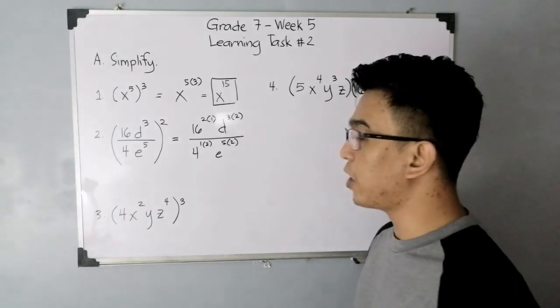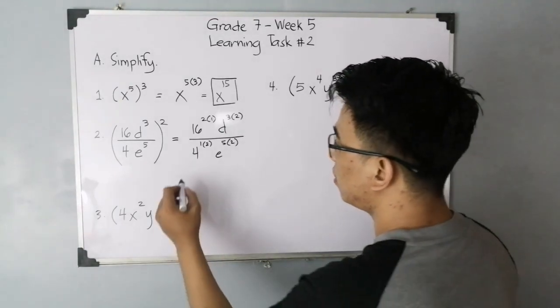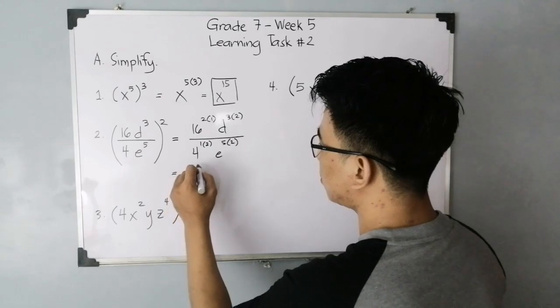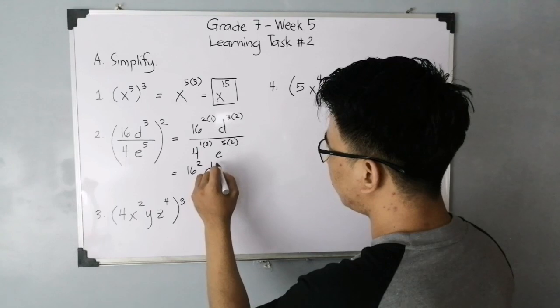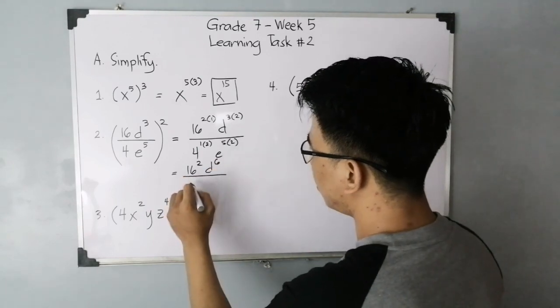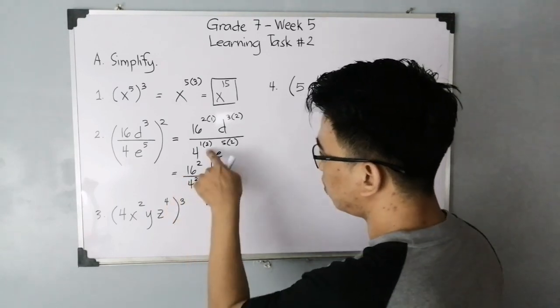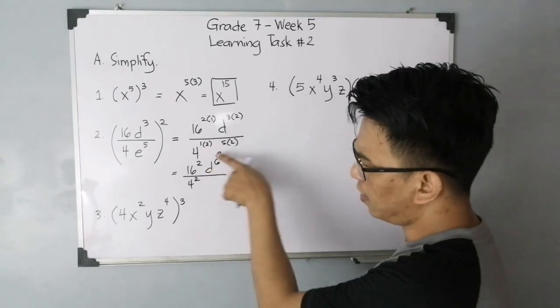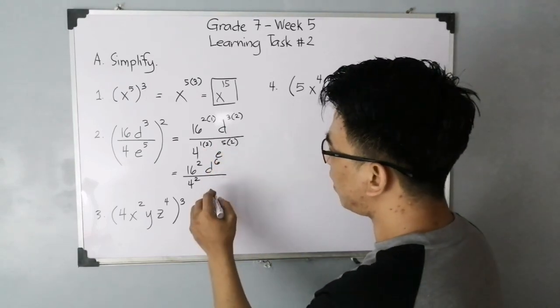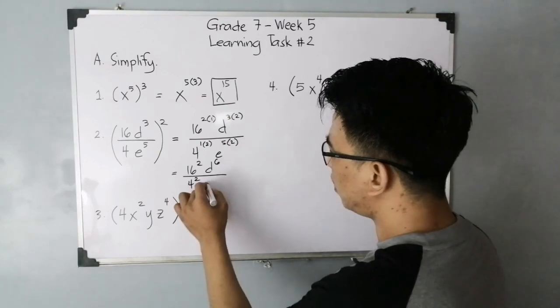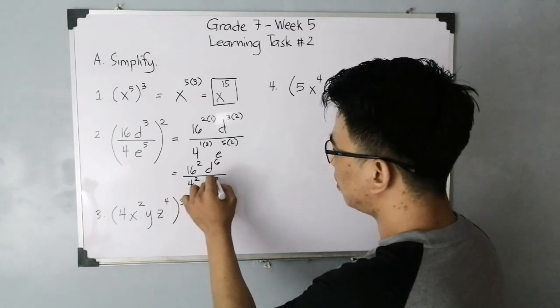Over, for the exponent 4, you have 4 raised to 1 times 2. And then for the variable e, you have e raised to 5 times 2. All you need to do is simplify the exponents. You need to check if it's in simplified form. This is 16 squared, your d raised to 6 over your 4 raised to 2, which is 1 times 2, and for the variable e, 5 times 2, e raised to 10.